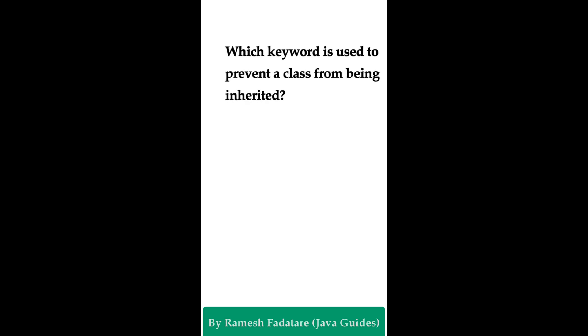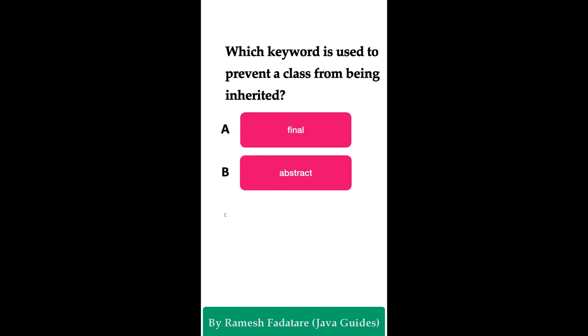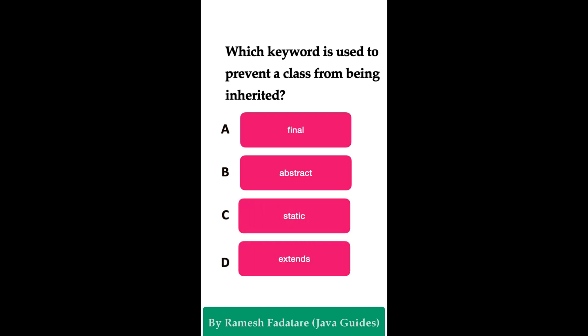Welcome to Java quiz series. Here is one more question: Which keyword is used to prevent a class from being inherited? Option A: final keyword. Option B: abstract keyword. Option C: static keyword. Option D: extends keyword. The correct answer is option A: the final keyword. When we create a class with the final keyword, that class cannot be subclassed or extended, which prevents it from being inherited in Java.